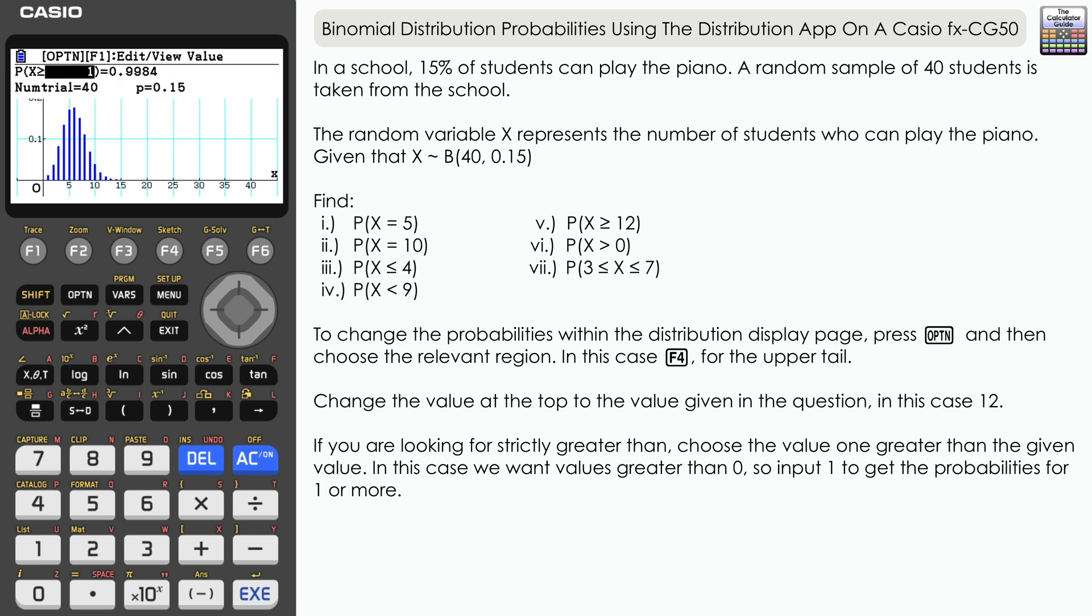X is greater than or equal to 1. You can see here 0.9984, so it's very likely that we're going to find at least one student who can play the piano in a sample of 40.